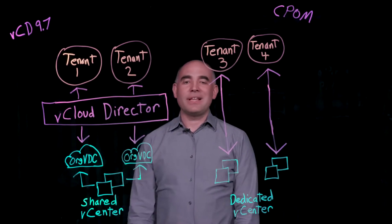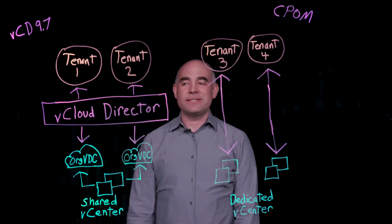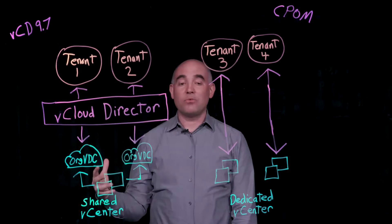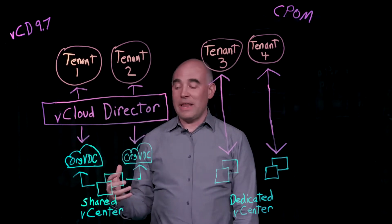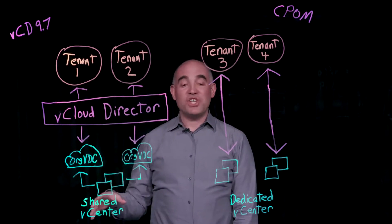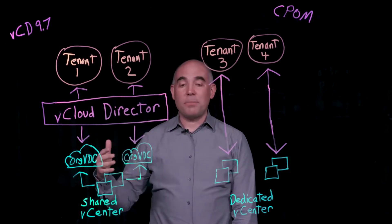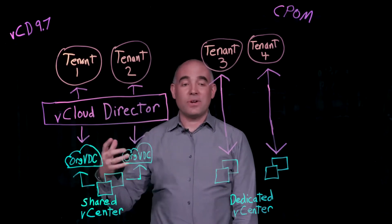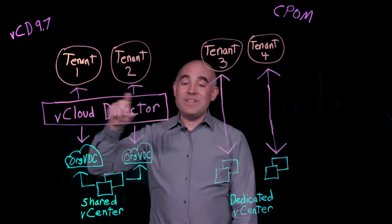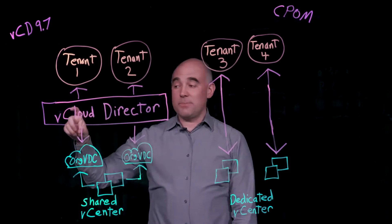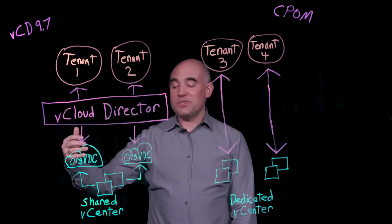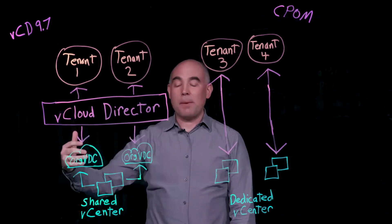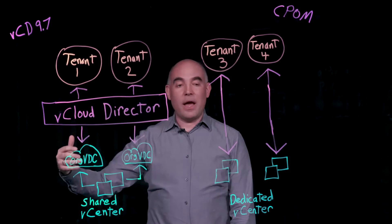To set this up, we'll first talk about the classic use case in the way VCD is typically used. We have a couple of tenants accessing cloud resources offered by a VMware cloud provider. There's a shared vCenter with a couple of organizational virtual data centers, or org VDCs, providing those cloud resources. VCD sits in the middle as an abstraction layer, and tenants access these org VDCs via a tenant portal.